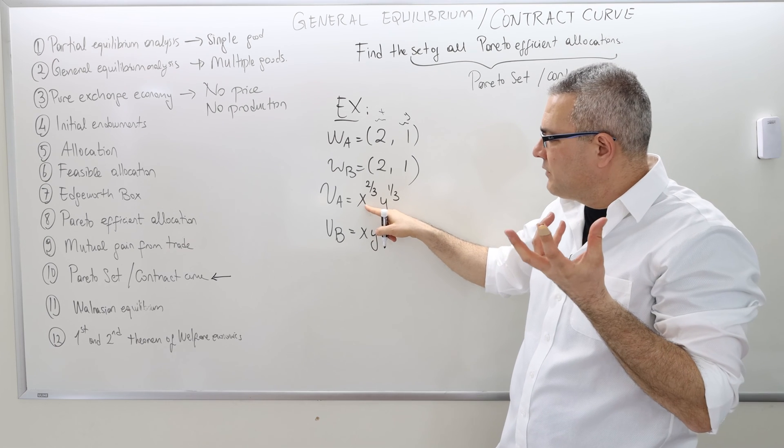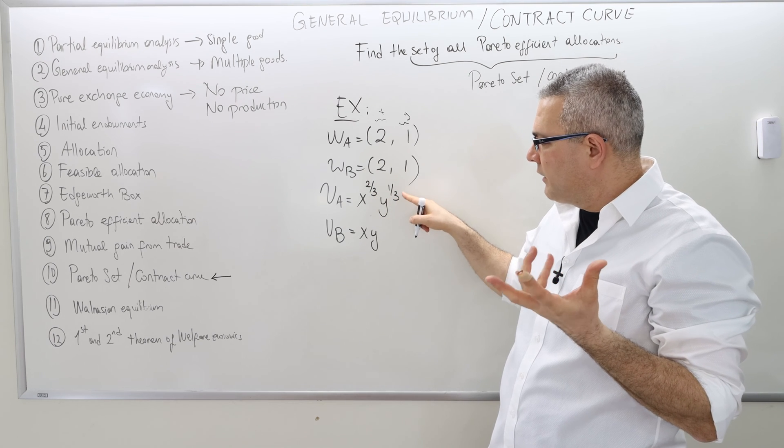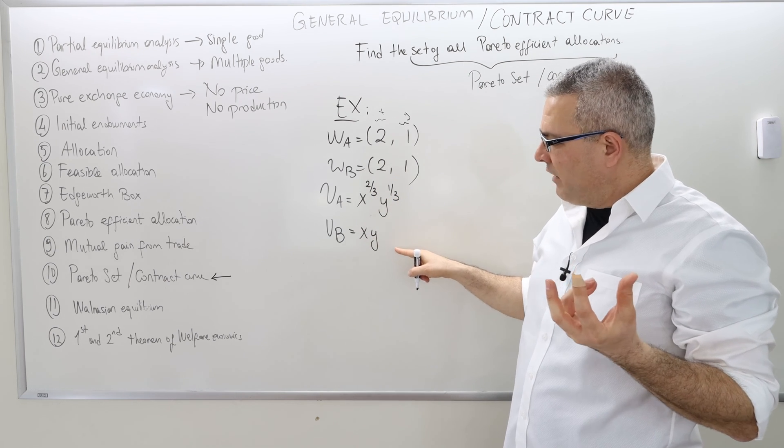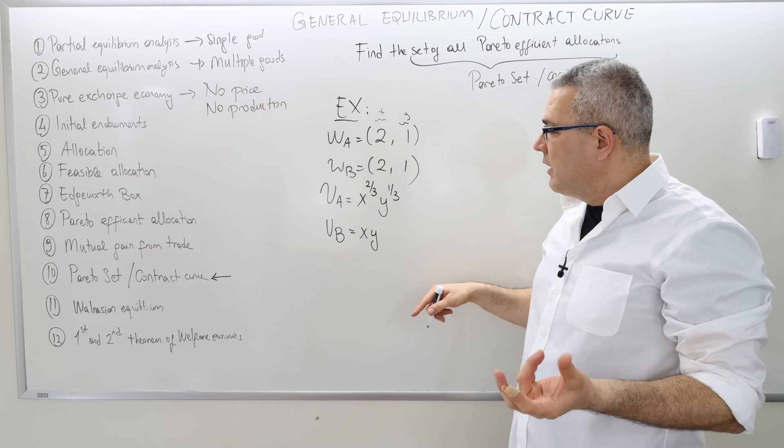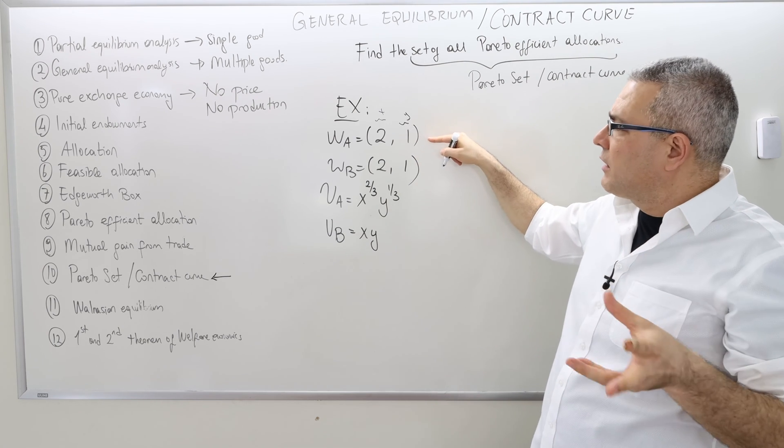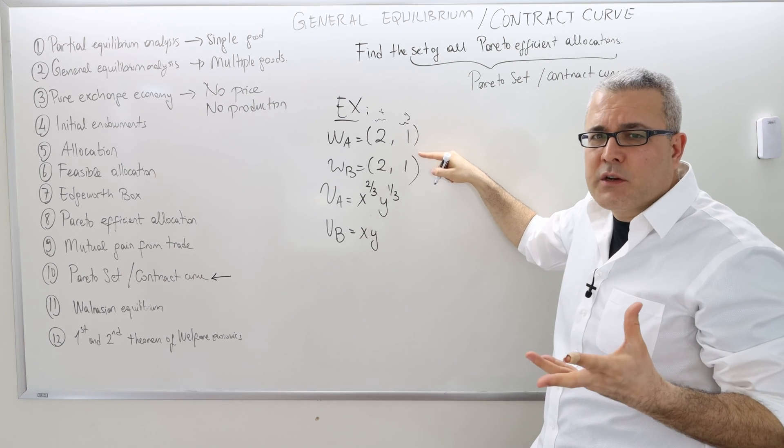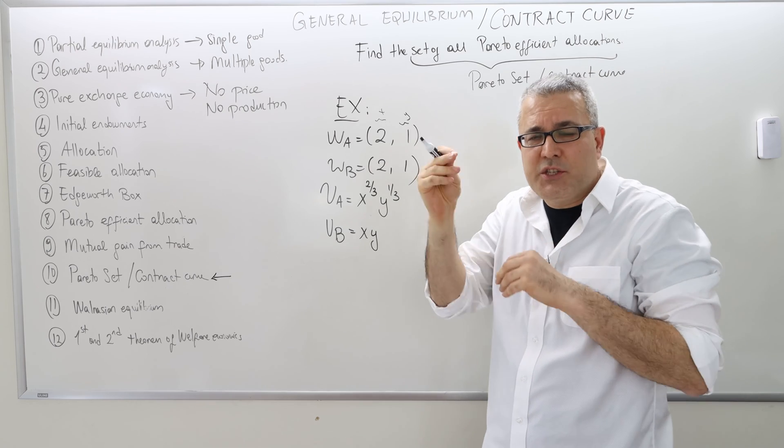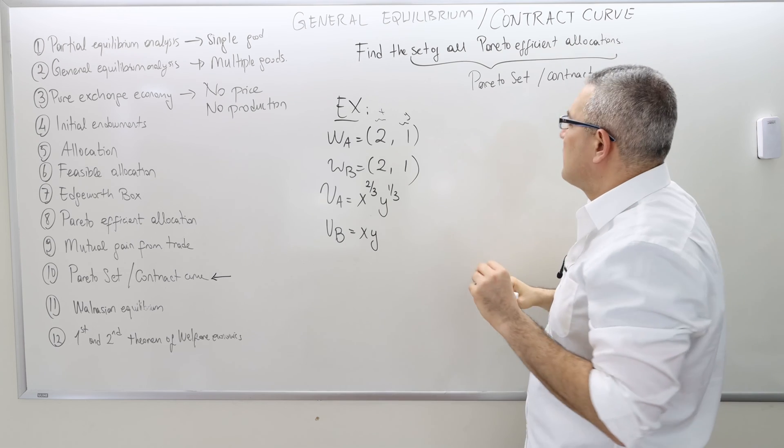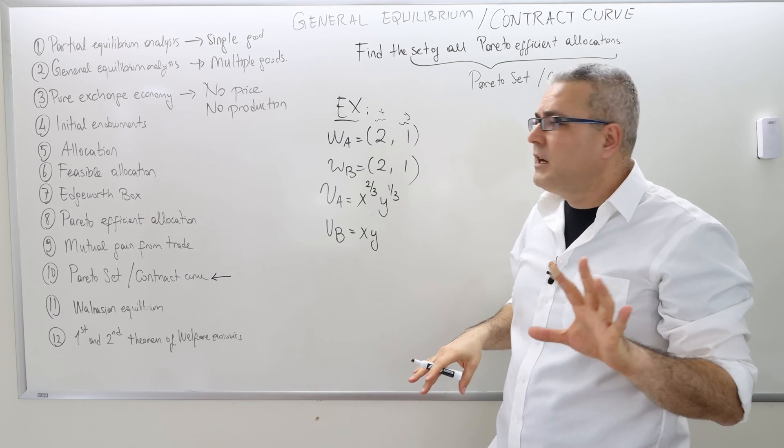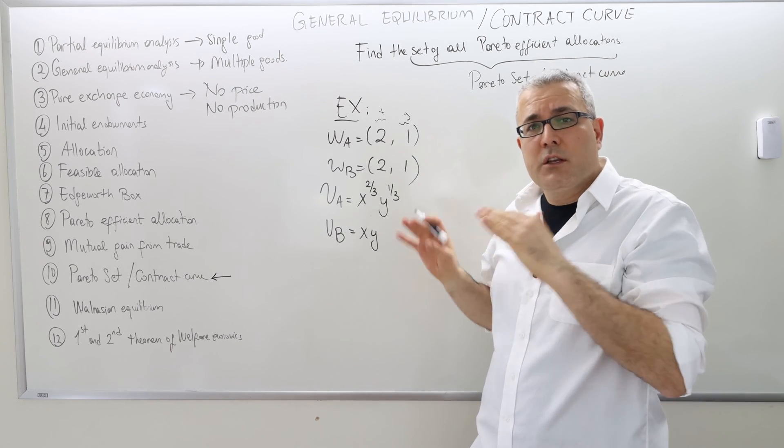The utility functions are as follows. Agent A values x more than y because it's power 2/3, whereas power for y is 1/3. Agent B values both x and y equally. In this question, it's really hard to answer whether the initial endowment is Pareto-efficient or not. You really need a calculator to check the utilities. But finding the Pareto-efficient set or the contract curve will make our life much easier. The contract curve in this example is not going to be a straight line, but it's going to be a curve.